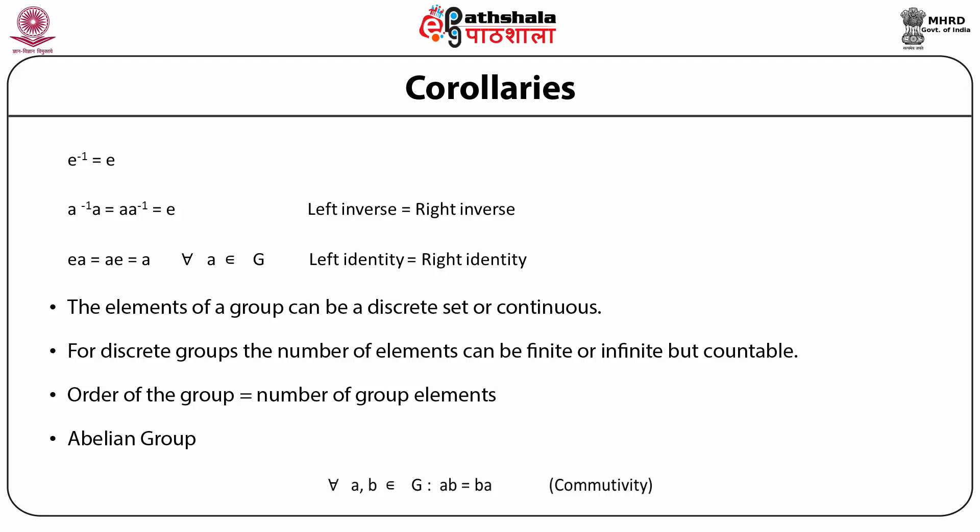The identity element defined in the axioms is a right identity as it multiplies an element A of the group G on the right. If one defines similarly a left identity E' which also belongs to G, satisfying E'·A = A for all A belonging to G, then it is very easy to prove that E' equals E — meaning the left identity equals the right identity.